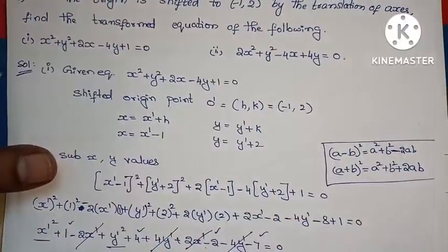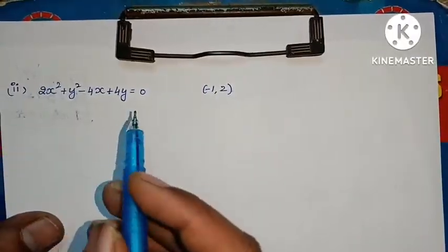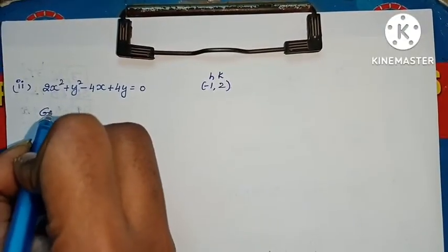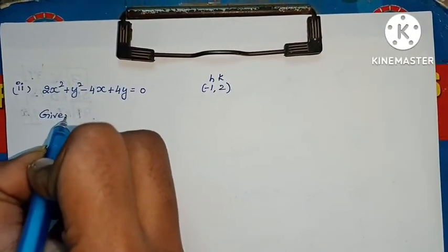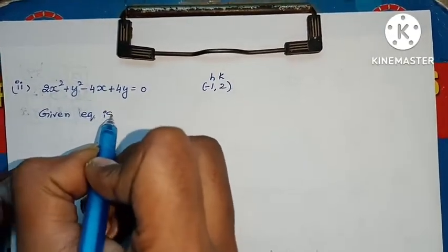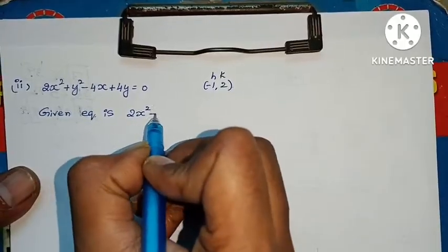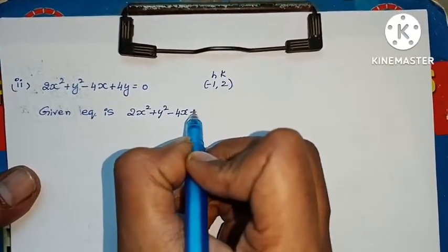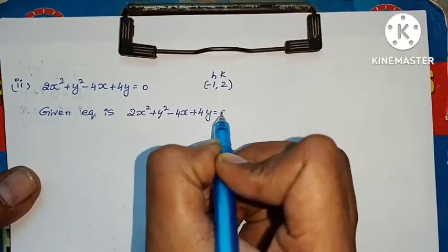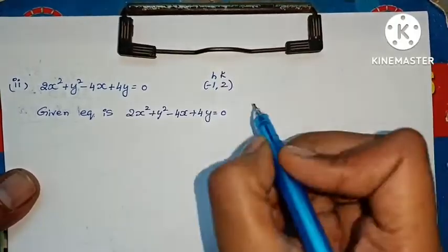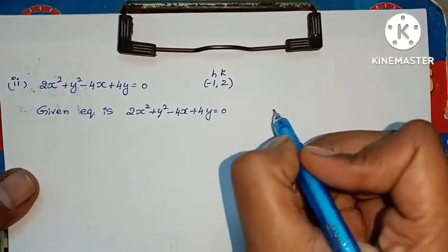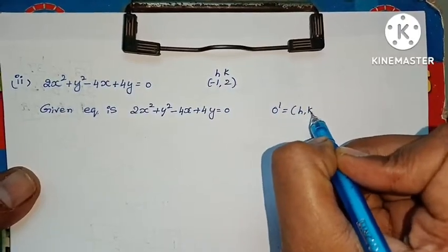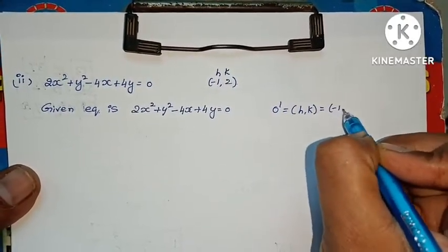Now we take the second question. Given equation is 2x square plus y square minus 4x plus 4y equals to 0. The transformed origin point o dash equals to h comma k, that equals to minus 1 comma 2.